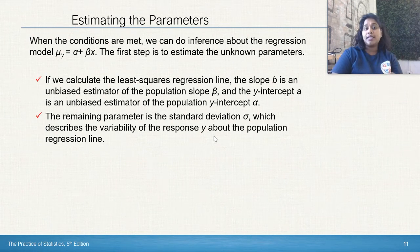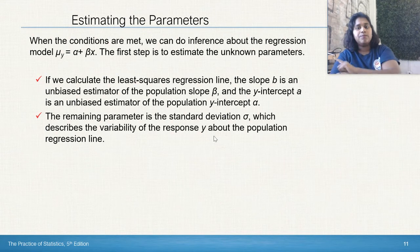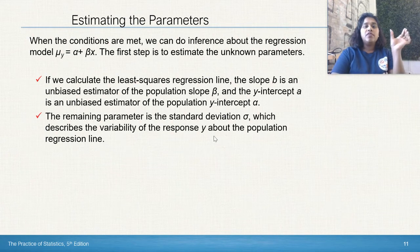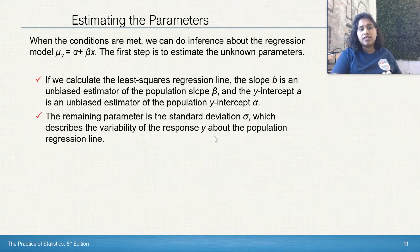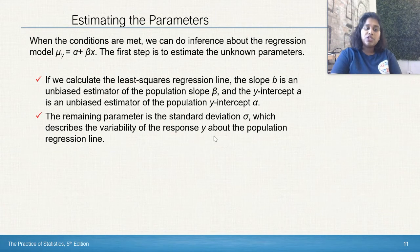The y-intercept is an unbiased estimate of the population y-intercept of alpha. Remember that the capital B, that beta value, and the alpha symbol are talking about our populations.